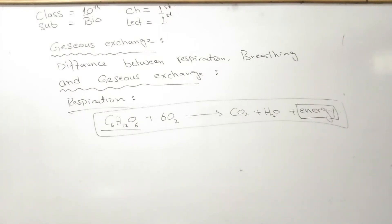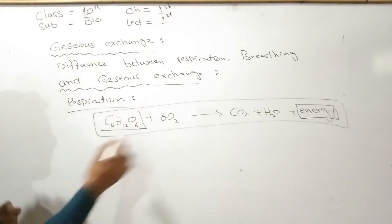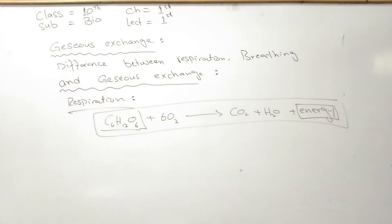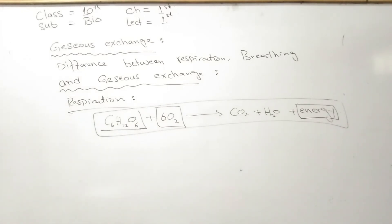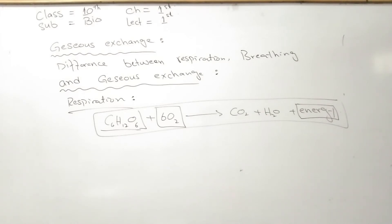For aerobic respiration, oxygen is used in the reaction. Anaerobic respiration does not use oxygen. Anaerobic respiration is used by bacteria and sometimes by muscles. Aerobic respiration is used by higher plants and animals under normal conditions.